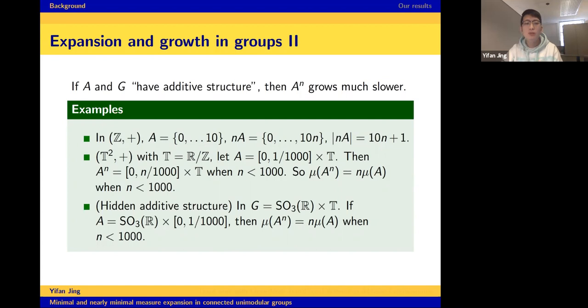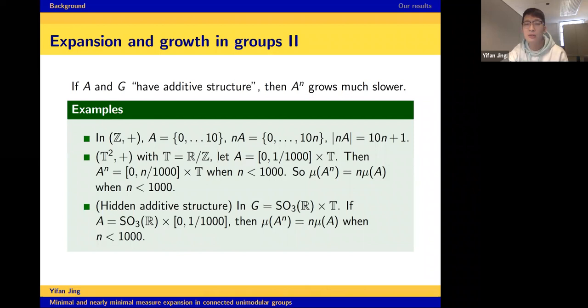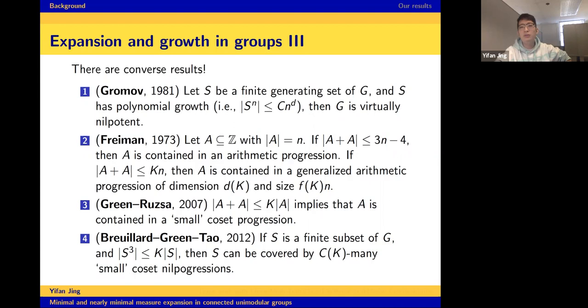We are interested in characterizing the structure of sets A with small expansion. A famous result by Gromov says: if S is a finite generating set of G and S^n has polynomial growth — bounded by n^d for some d — then G is virtually nilpotent. One can view a nilpotent group as a natural generalization of an abelian group. So if G has a small expansion set, then in some sense G should have some abelian/additive structure inside it.